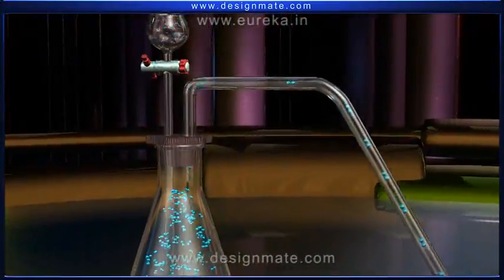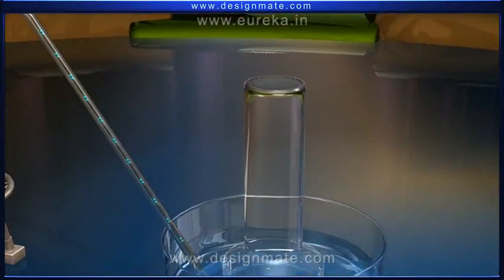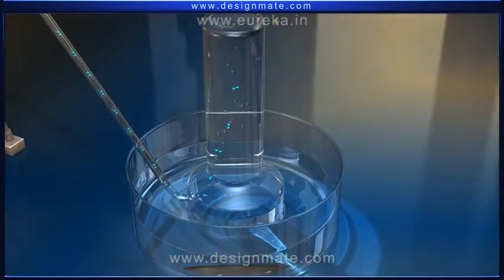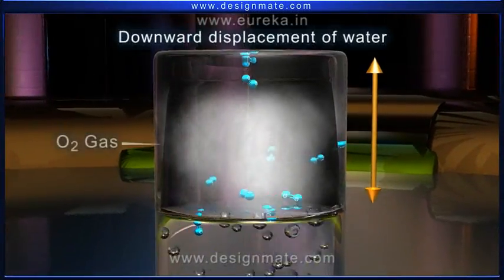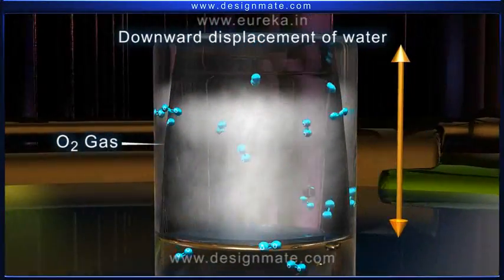The released oxygen gas passes through the delivery tube, then over water and starts getting collected in the gas jar. This method of collection of gas is called the downward displacement of water.